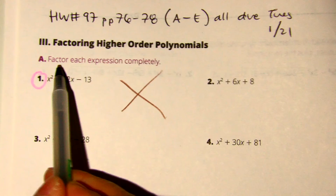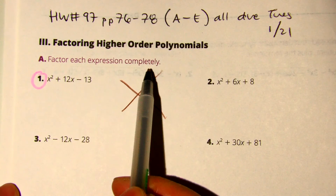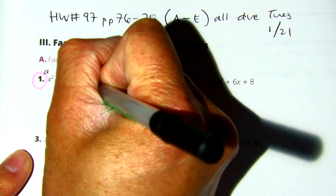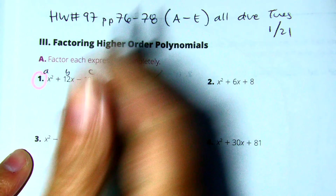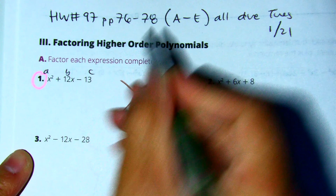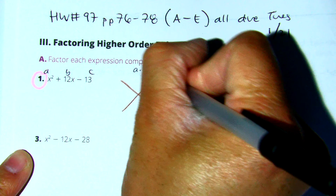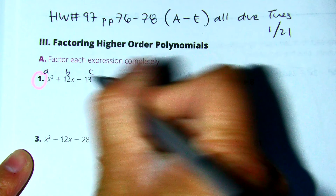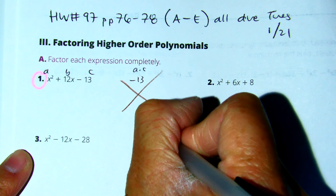Factor each expression completely. I have an A, B, and C. A times C equals negative 13. My B value is 12.